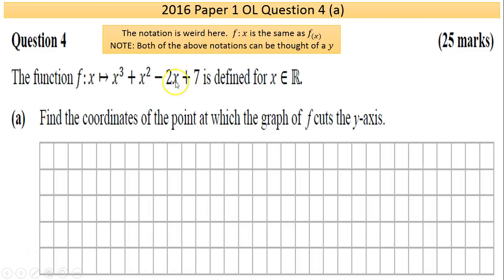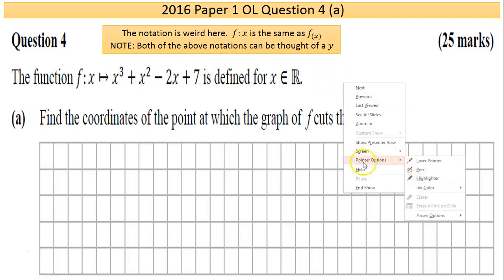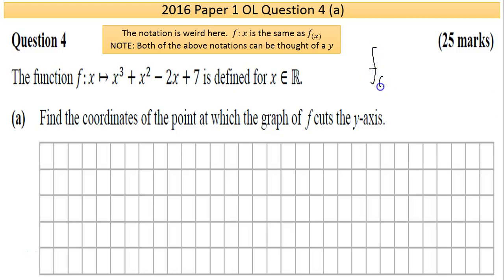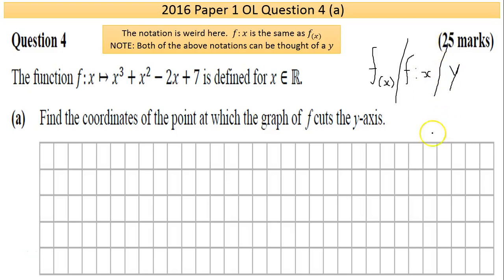Function notation can be very weird. Normally we look at function notation written like f of x. I usually write the x a bit lower just to show that x is just part of the f. So f of x is sometimes written with a colon — f colon x — and ultimately you can always consider that to be just y.